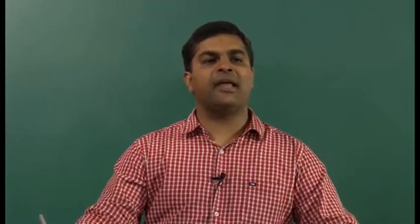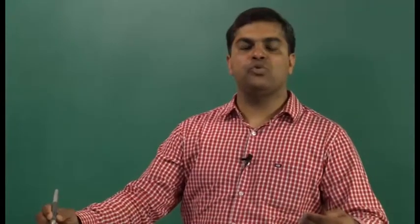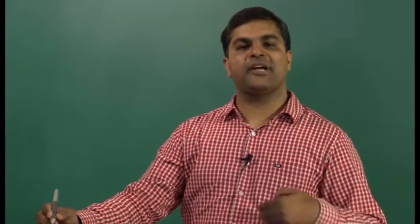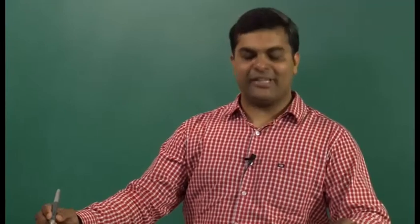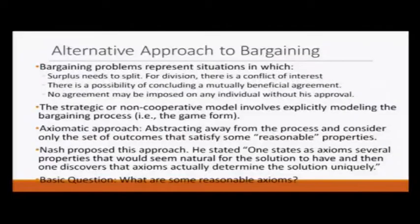In real life we face several situations in which the bargaining process cannot be pinpointed exactly — that first player one will make an offer, then player two will accept or reject, then player two makes an offer, and so on. We do not know the exact process. So we are going to take a slightly different approach called the axiomatic approach, in which we abstract away from the process and consider only the set of outcomes that satisfy some reasonable properties.